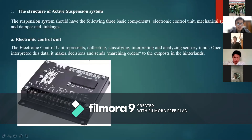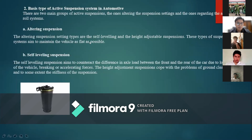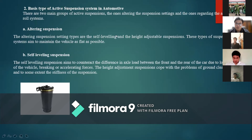The basic types of active suspension: this section covers two main types — road-touring suspension and self-leveling suspension. Road-touring suspension maintains the vehicle as level as possible. Self-leveling suspension counteracts the difference in load between the front and rear of the car due to loading, braking, or accelerating forces, and adjusts suspension stiffness to address ground clearance issues.